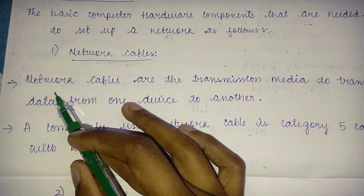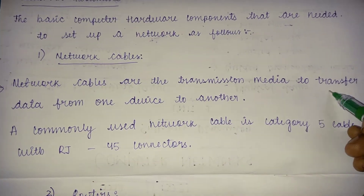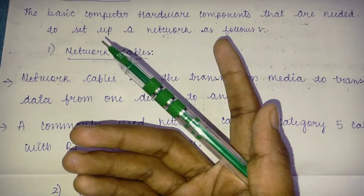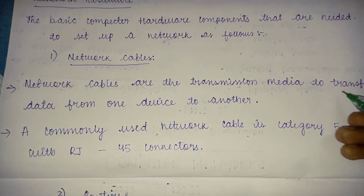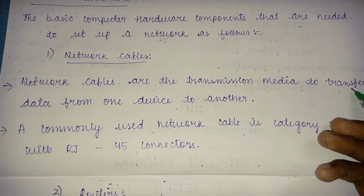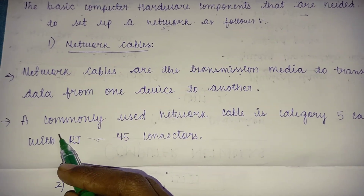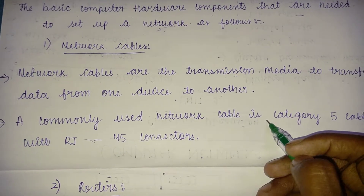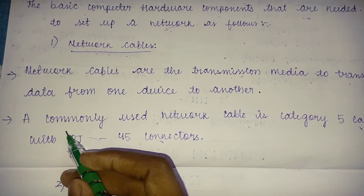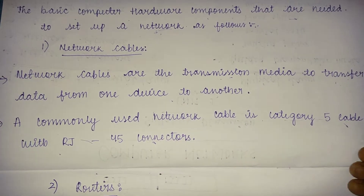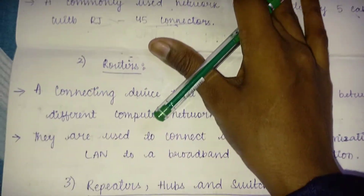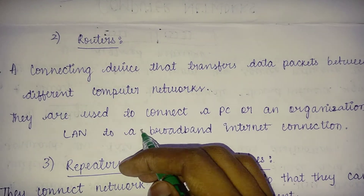The first one is network cables. Network cables are the transmission media used to transfer data from one device to another. A commonly used network cable is the Category 5 cable with RJ-45 connectors. What you have to remember is: network cable is Category 5 cable with RJ-45 connectors.